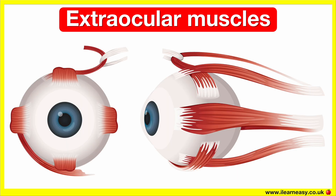The rectus muscles all originate from the common tendinous ring, also known as the annulus of Zinn. They insert on the sclera, the white part of the eye.